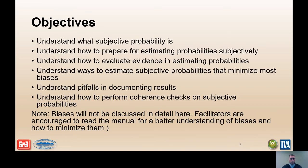The objectives are to understand what subjective probability is, how to prepare for estimating probability subjectively, how to evaluate evidence in estimating probabilities, ways to estimate subjective probabilities that minimize most biases, pitfalls, documenting results, and how to perform coherence checks on subjective probabilities. Note: biases will not be discussed in detail here. Facilitators are encouraged to read the manual for a better understanding of biases and how to minimize them.